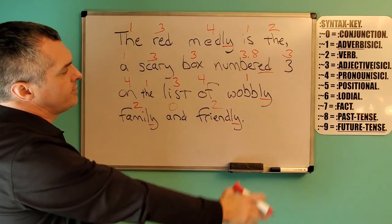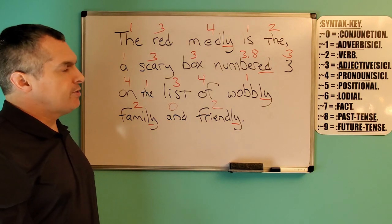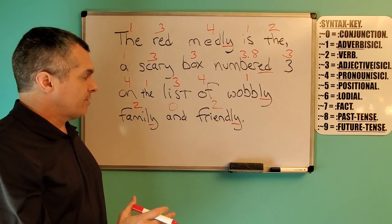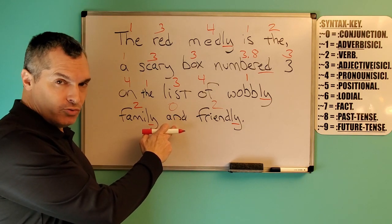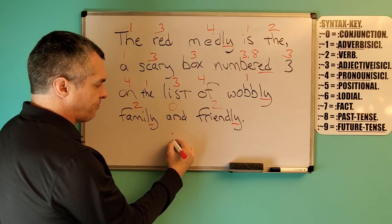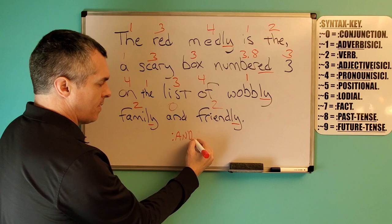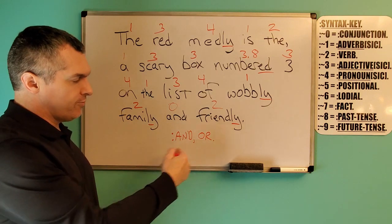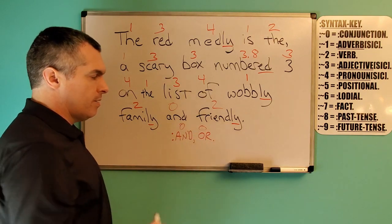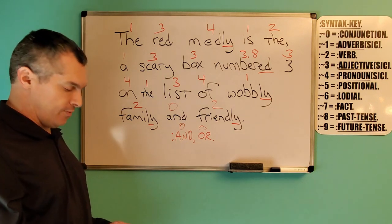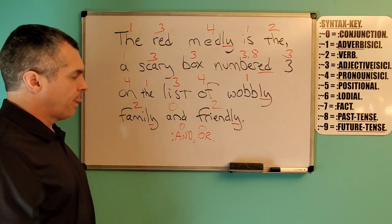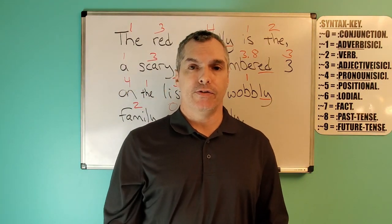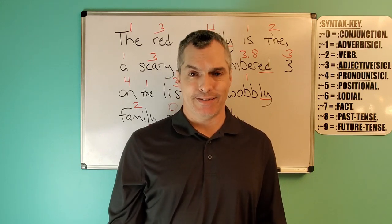If there are any words in this scenario that you could just come in and put a number above without worrying about being incorrect, it would be the conjunctions, because there are two conjunctions: 'and' and 'or.' So if you see those words on a paper, you can go in and put a zero above them, and you would be correct without worry of mistakes. I hope this has helped further your cognition of correct sentence structure, communication, parsing, syntax, grammar, and the syntax mechanics.